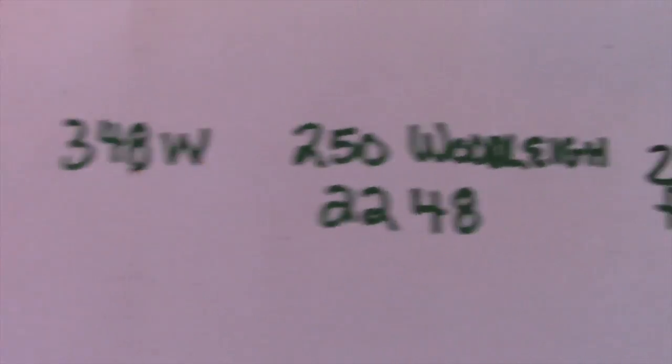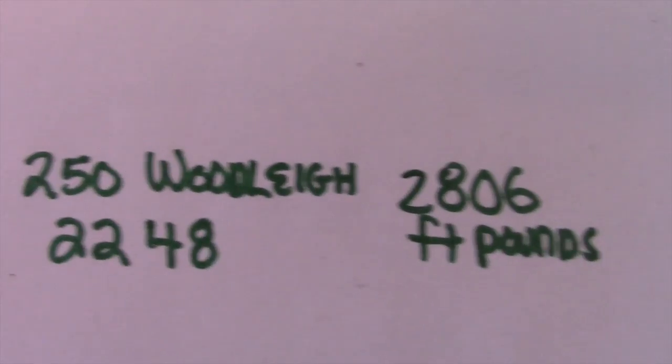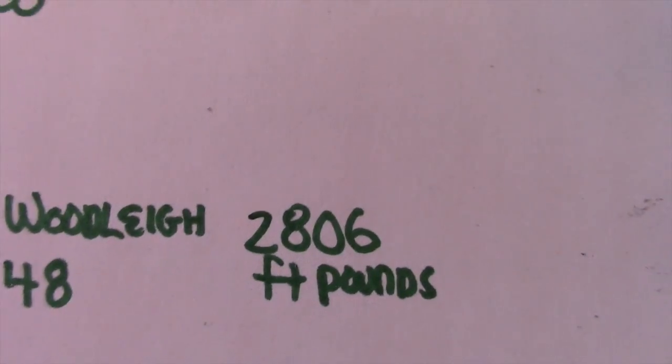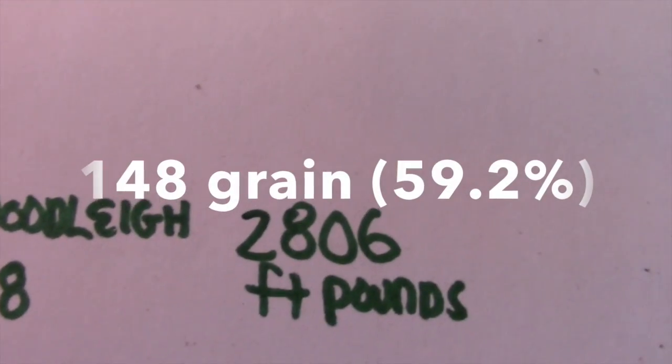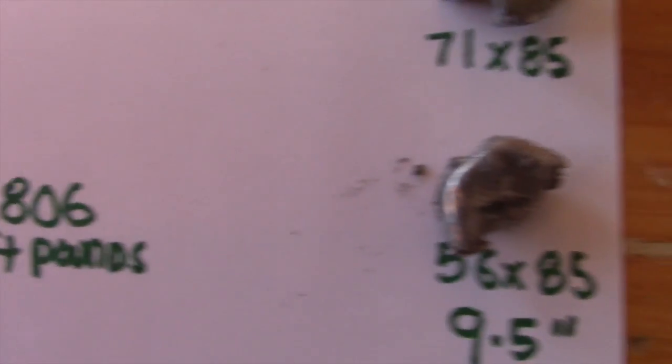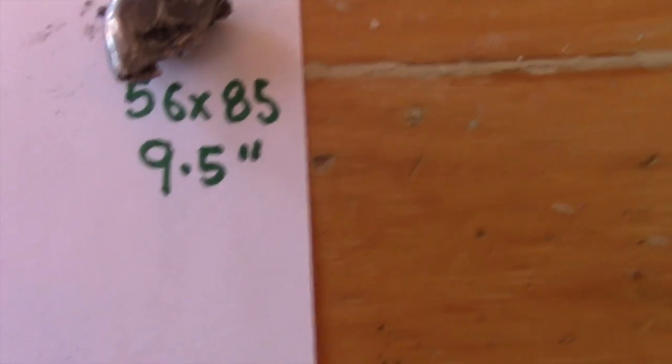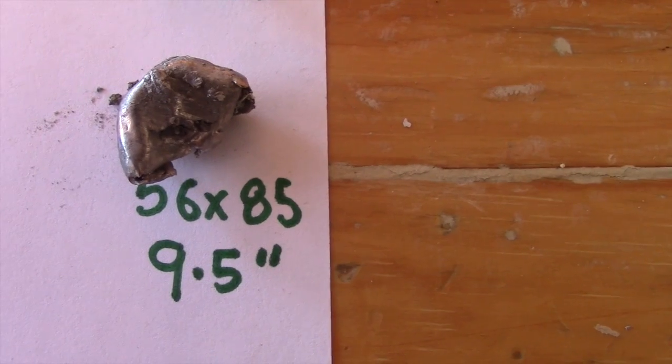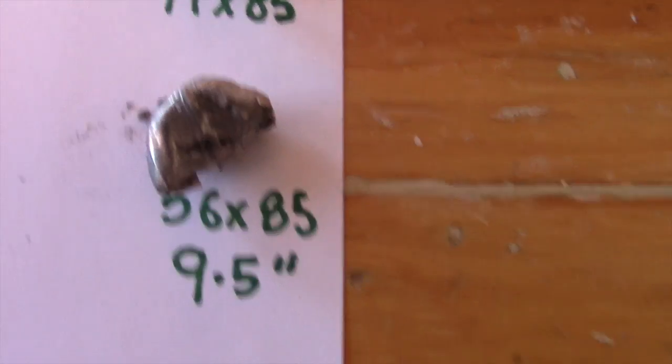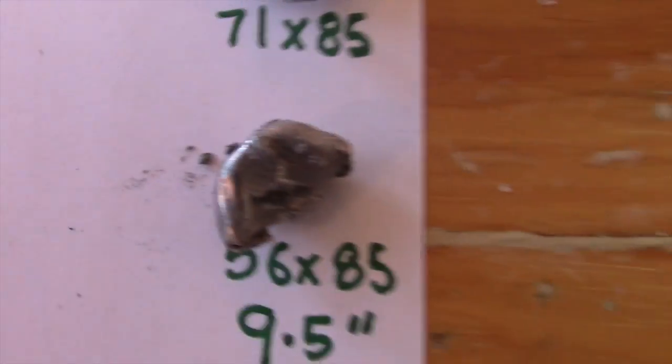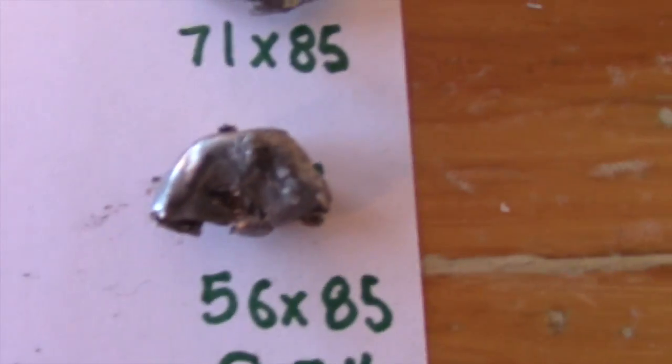The .348 Winchester with a 250 grain Woodleigh at 2248. That's 2806 foot-pounds. Again, that's about 15 feet, so it'll be a little more than that at the muzzle. So it again is just across our minimum energy. But it had good bullet weight retention. It penetrated 9.5 inches, which is considerably more than the 300 Woodleigh. And it expanded to 56 by 85. So very similar final shape. It's a little more oblong. So pretty good.